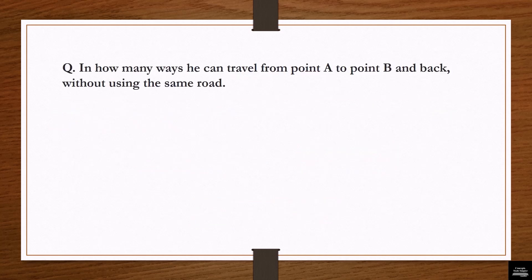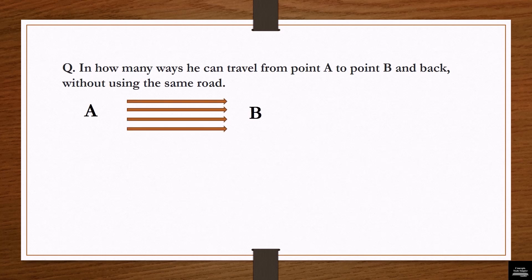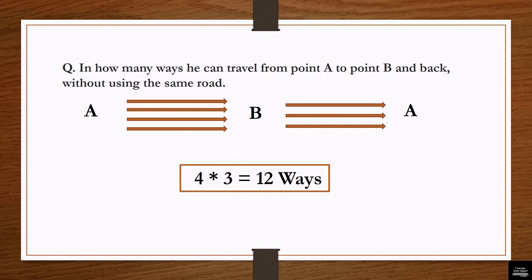In the next question: in how many ways can he travel from point A to point B and back without using the same road? The catch here is 'without using the same road.' A person has four different ways from A to B. But having used one road, that way is reduced. So from B back to A, he has only three unique ways. The solution is 4 × 3 = 12 ways.